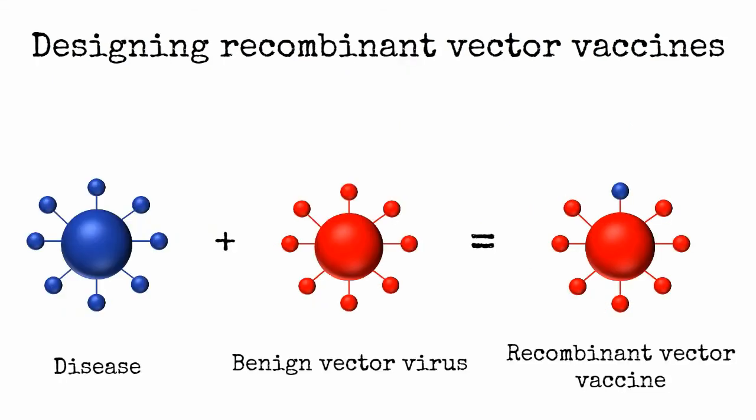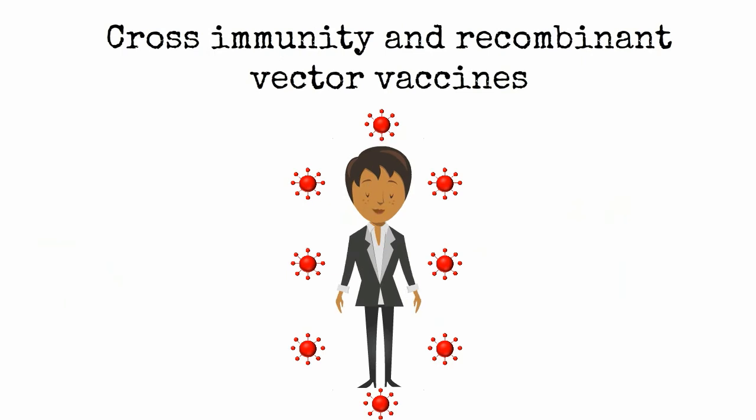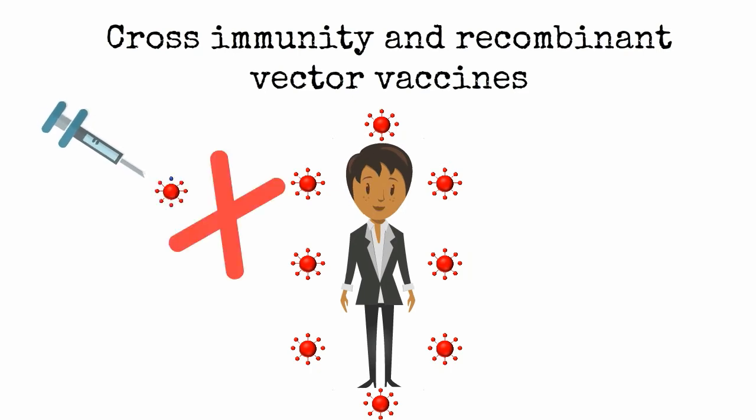Remember that the recombinant vector vaccine is a combination of a benign vector virus and a disease virus. If a benign vector virus already exists in a population, cross-immunity between the wild benign vector virus and the vaccine vector could prevent the spread of the vaccine. In other words, individuals infected with the wild vector virus may be immune to the vaccine vector virus.